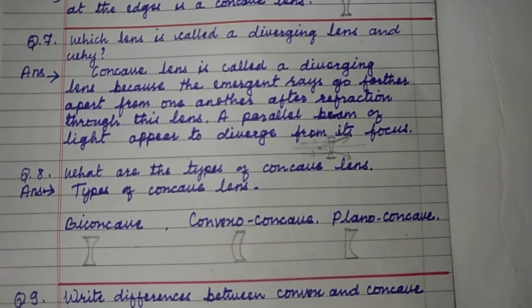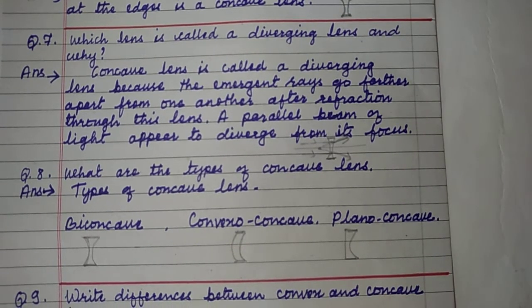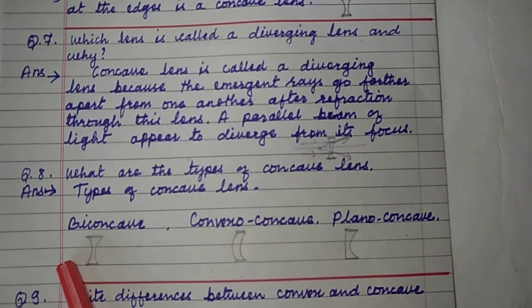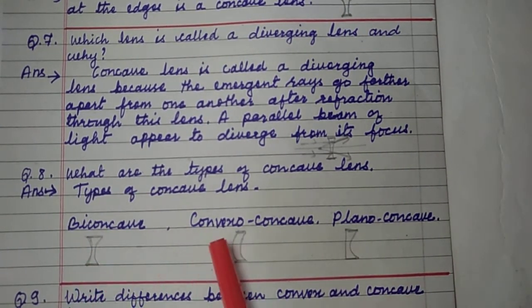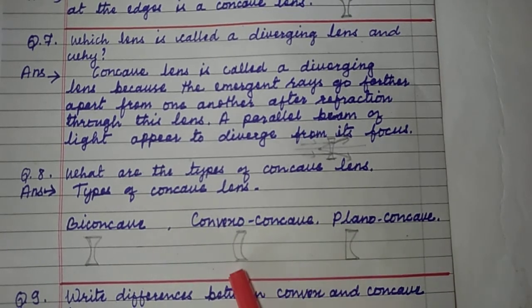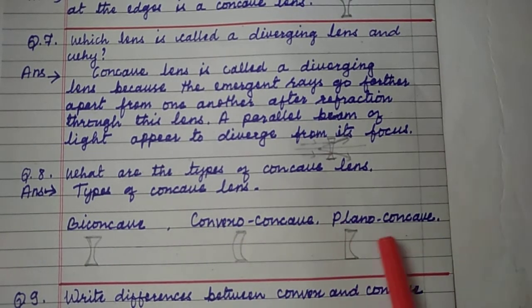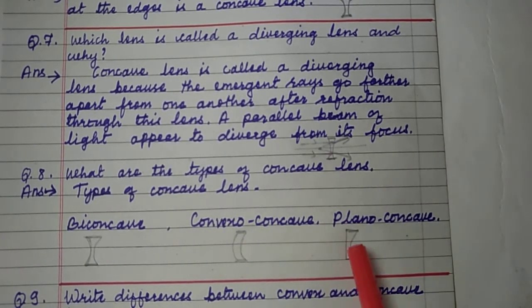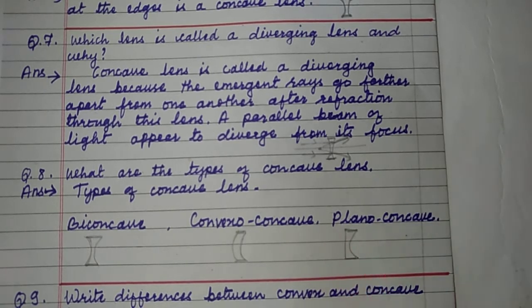What are the types of concave lens? Types of concave lens are: biconcave — both sides are concave (bi means two); convexo-concave; and plano-concave — one side is straight and another side is concave.